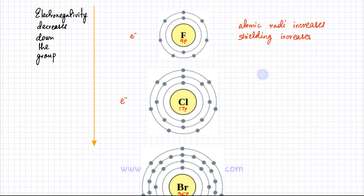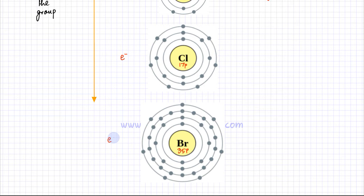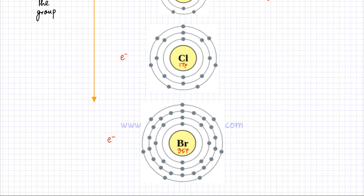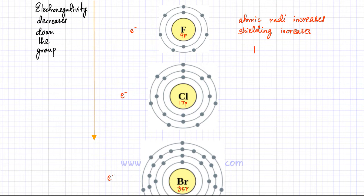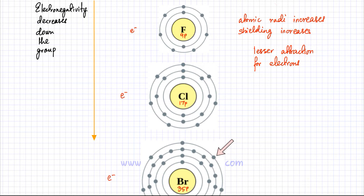If you move to bromine, an electron next to bromine would be much further away from the nucleus because bromine is a bigger atom. There would be a lot of shells coming in between, so the force of attraction from the nucleus would be weakened — this electron is not going to experience a strong pull. So as you move down the group, the atomic radius increases and the shielding increases. Hence, as you move down the group, there is a lesser attraction for electrons. Fluorine attracts electrons very strongly, but bromine does not attract electrons very strongly because of its large size and huge number of shells.